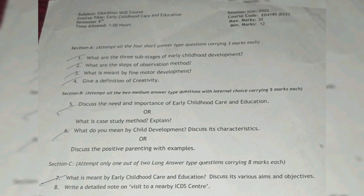Question number 1: What are the 3 sub-stages of early childhood development? Question number 2: What are the steps of observation method? Question number 3: What is meant by fine motor development? Question number 4: Give a definition of creativity.